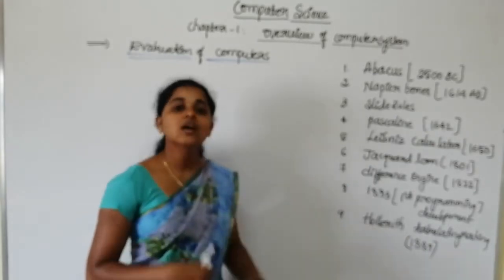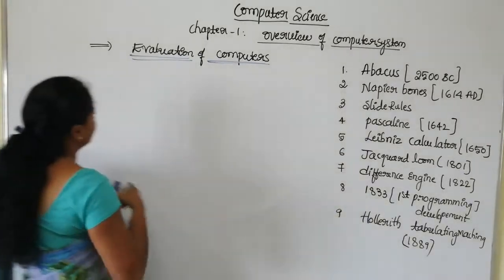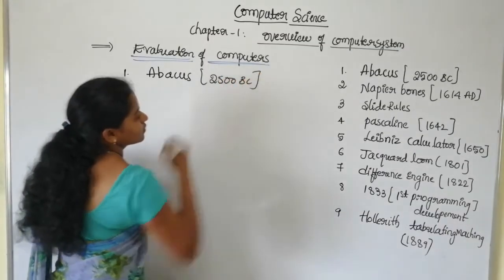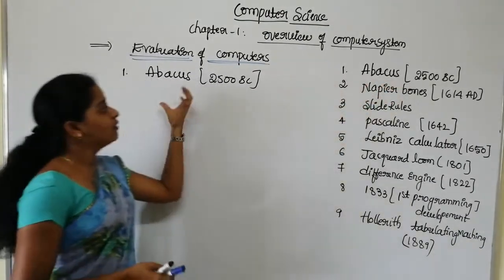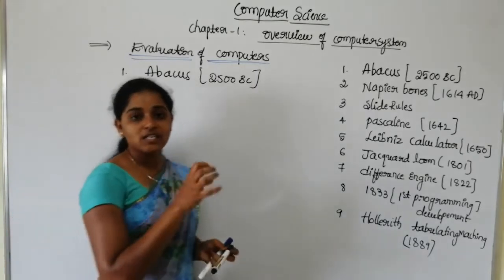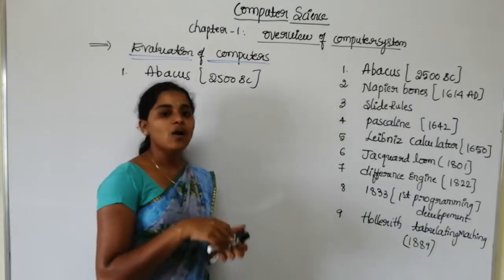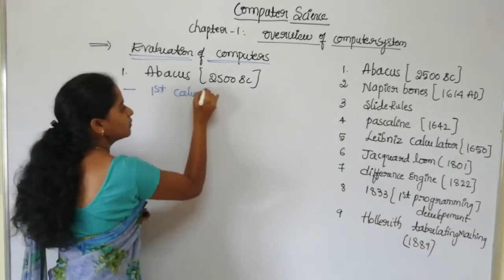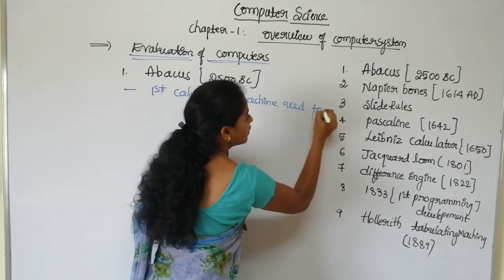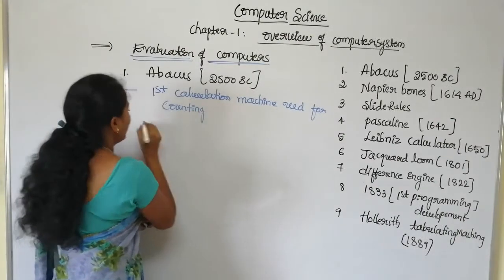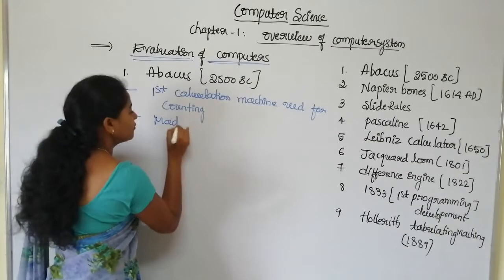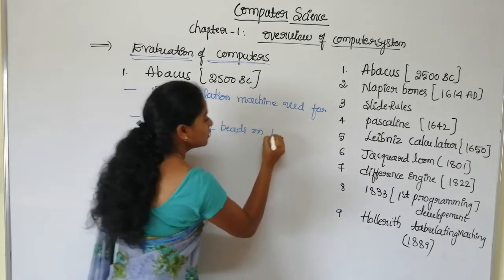The first tool is the Abacus. This Abacus was developed in 2500 BC and is the first calculating machine which is used for counting. It is made up of beads on cords.